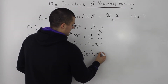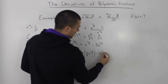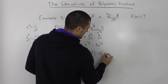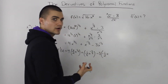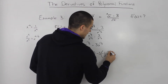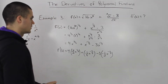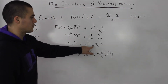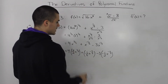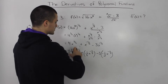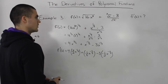Then minus 3 — keeping the 3 out front — and the derivative of x to the negative 1 half: bring the negative 1 half down, and negative 1 half minus 1 equals negative 1 half minus 2 over 2, which is negative 3 over 2. Be careful with your fractions whenever you're taking the derivative of rational exponents — make sure you don't slip up with the common denominators.